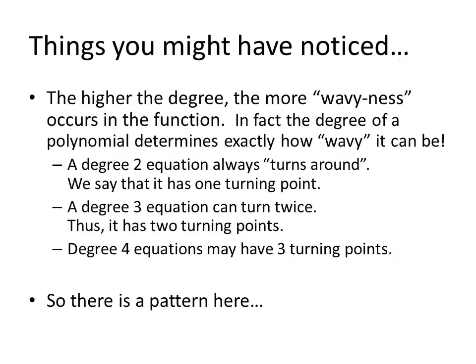You might have noticed that as the degree got higher, the functions became more wavy — that is, they kind of went up and down more. In fact, the degree of a polynomial determines exactly how wavy it can be. A degree 2 polynomial will have one big turn. A degree 3 polynomial has the possibility of turning twice, though it might not. A degree 4 polynomial can turn 3 times, and so on.